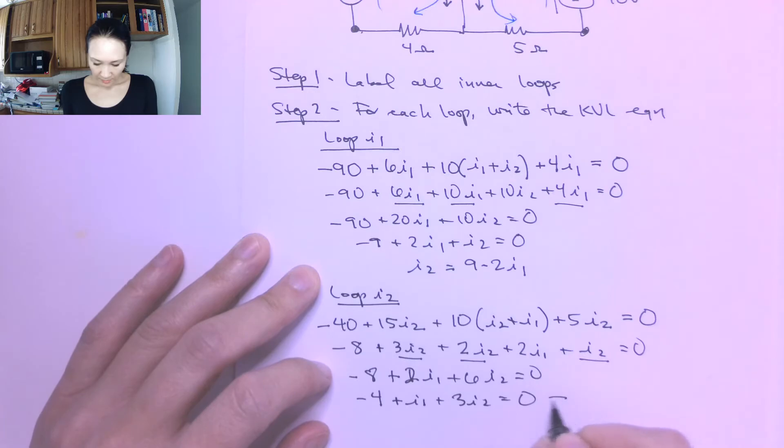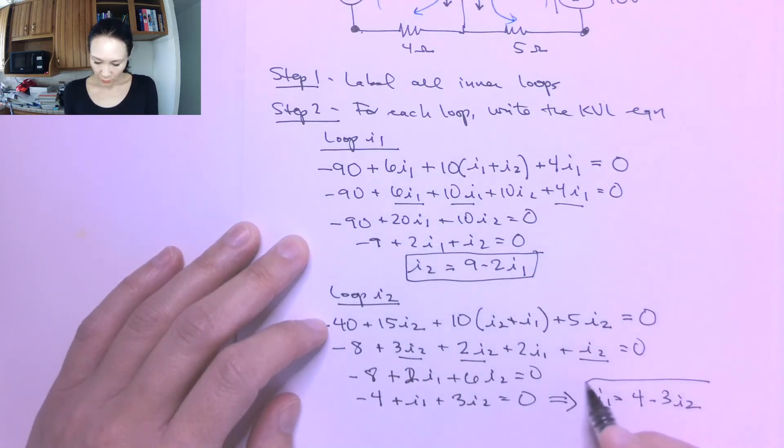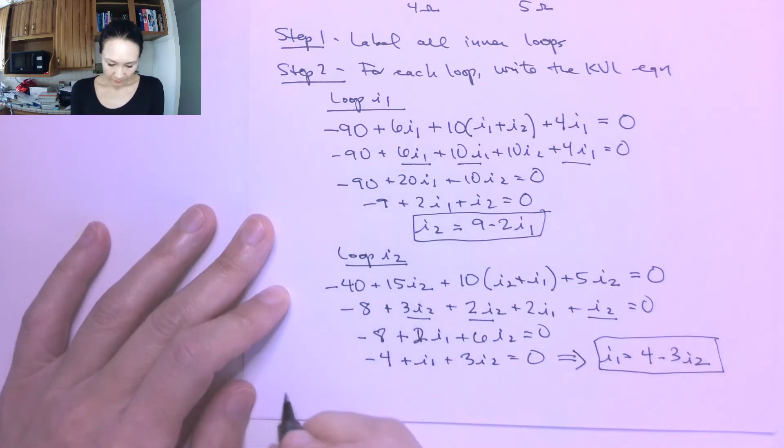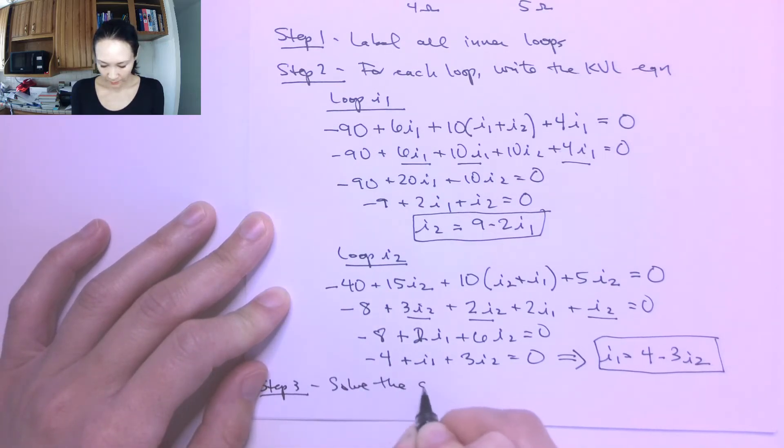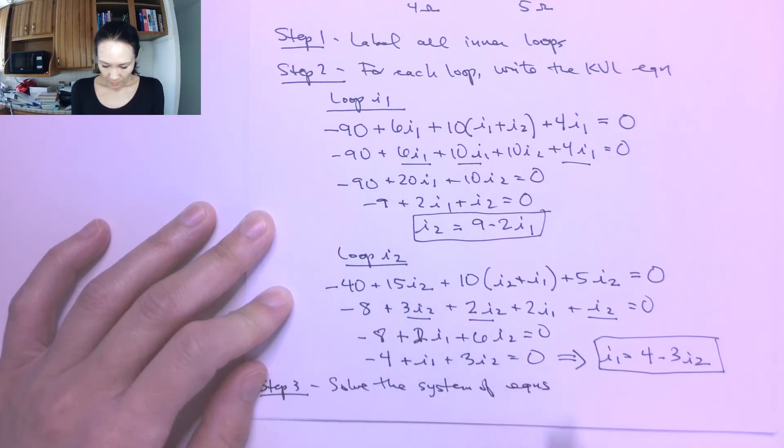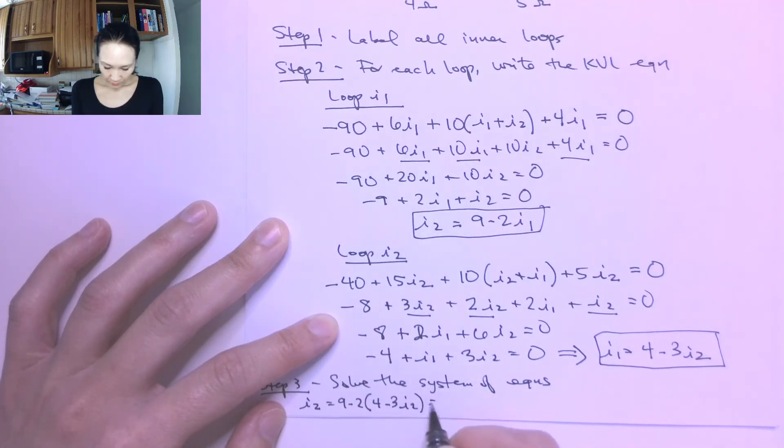And this means that I1 is equal to 4 minus 3I2. Okay, so here are my two equations and two unknowns. So the last step, step 3, is solve the system of equations. Okay, so I get, if I substitute one into the other, I'll say I2 is equal to 9 minus 2 times 4 minus 3 times I2, which gives me 9 minus 8 plus 6I2. So this implies that for I2, I get negative 0.2 amps.